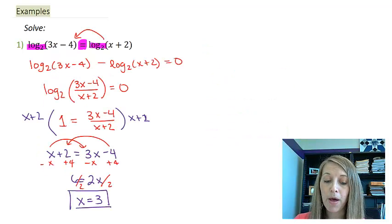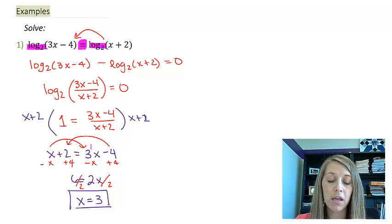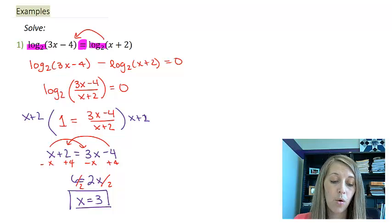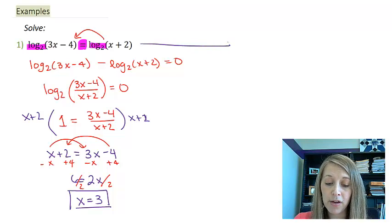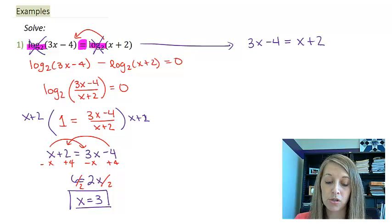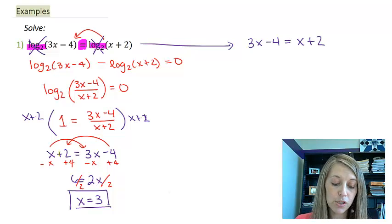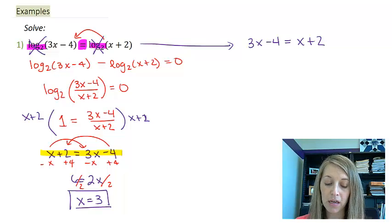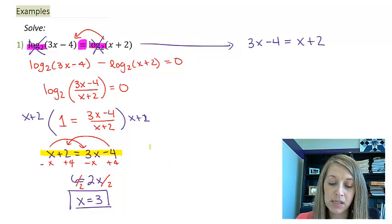So I did it here by using the properties that I knew. Let's do it again by using my equivalence formula. Well, this one is going to be very straightforward. I can basically drop my log base 2 and that gives me the equation of 3x minus 4 is equal to x plus 2, which is the exact same thing that we had here. So, of course, we're going to get the same answer.